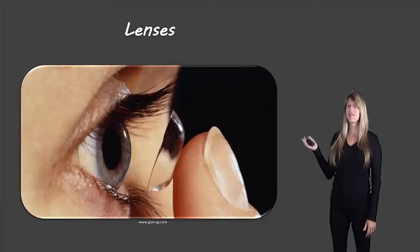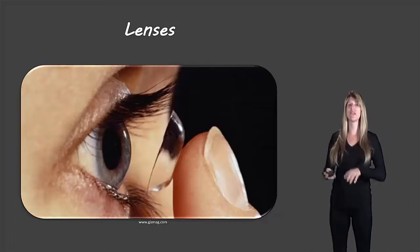Now this picture is a great example of lenses because it actually shows two types of lenses, a contact lens and the lens in the eyeball which is a lens very similar to the ones we'll talk about at the start of the lesson today.